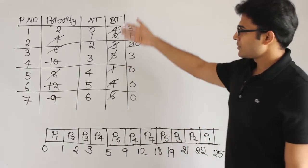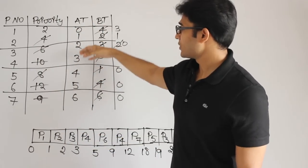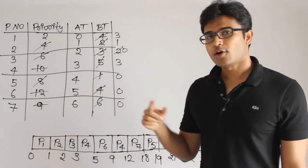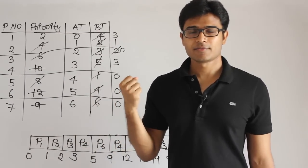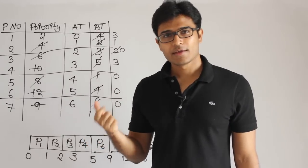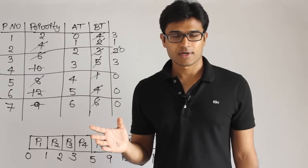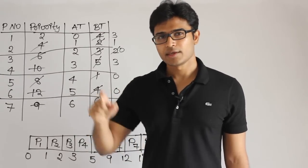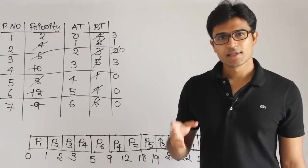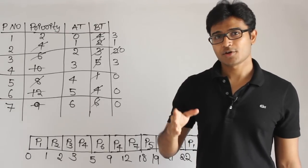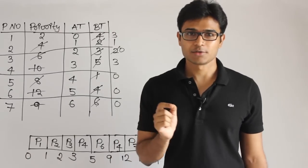If all processes arrive at the same time with all their priorities, the non-preemptive version and preemptive version will be exactly similar. The reason is you pick the one with highest priority and no other process arrives later, so you run it till completion — same as non-preemptive. Even in Shortest Job First, if all processes arrive at the same time, non-preemptive and preemptive versions are the same.